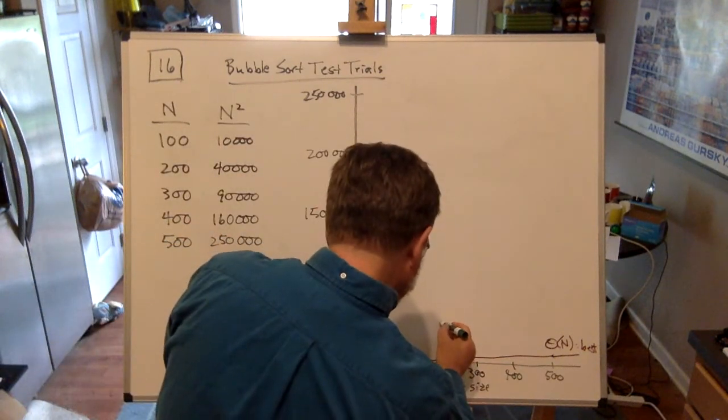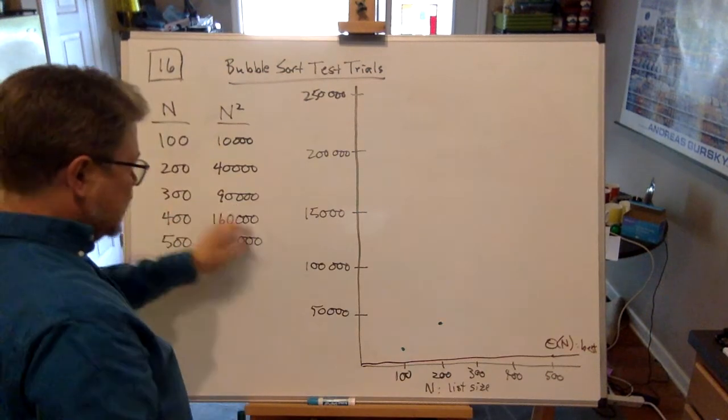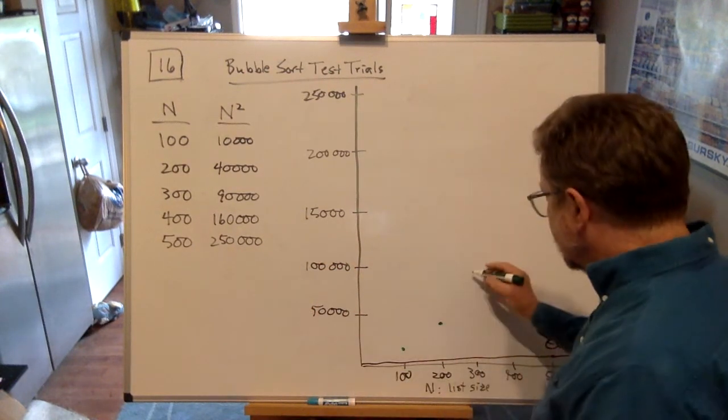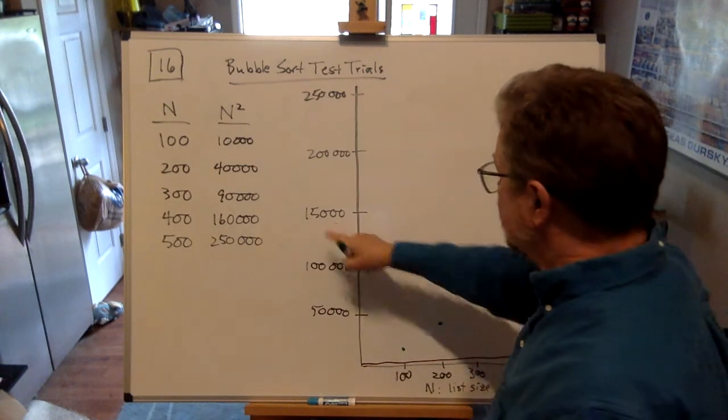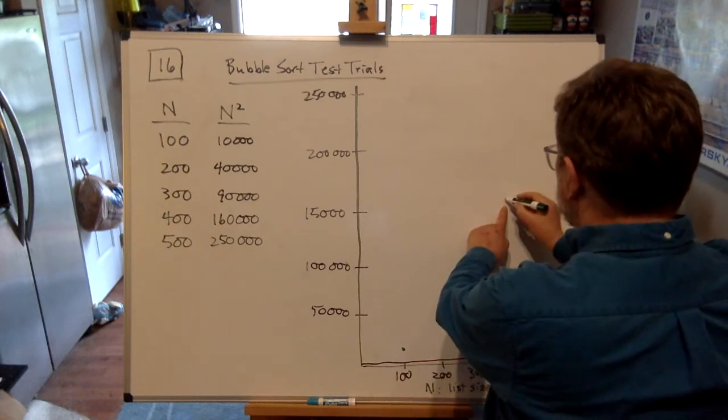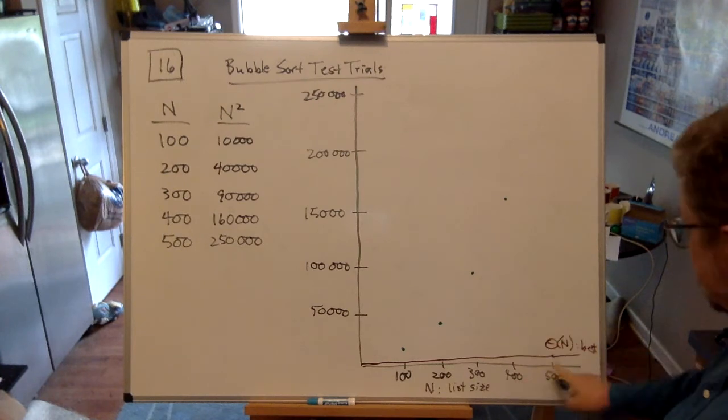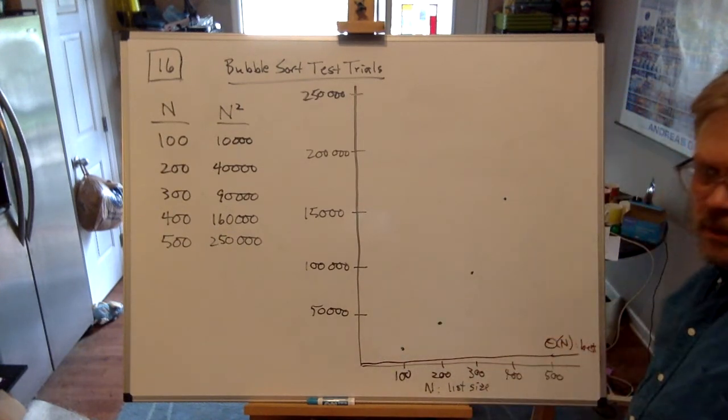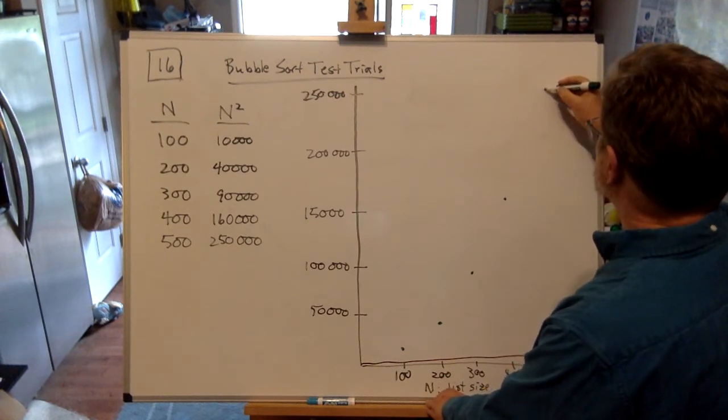Then I go over 300 and up 90,000 because that's almost to 100,000. So over here to 300 and almost to 100,000, about right there. Then 400, I go up to 160,000, which is a little above 150,000. So here's the 400 list size and I go up to just a little above 150,000. Then my last experimental list size is 500, which goes all the way up to 250,000. That's why I chose this scale.